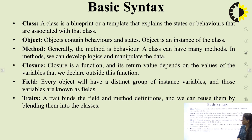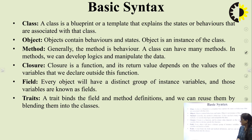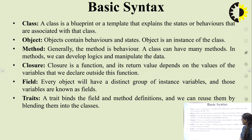Next is closure. Closure is a function and it returns a value depending on the value of the variable declared outside this function. Next is field. Every object will have a distinct group of instance variables, and those variables are known as fields. Next is traits. A trait binds the field and method definitions, and we can reuse them by blending them into classes.